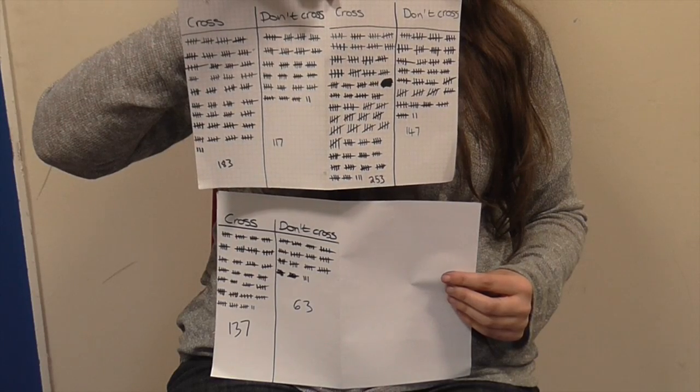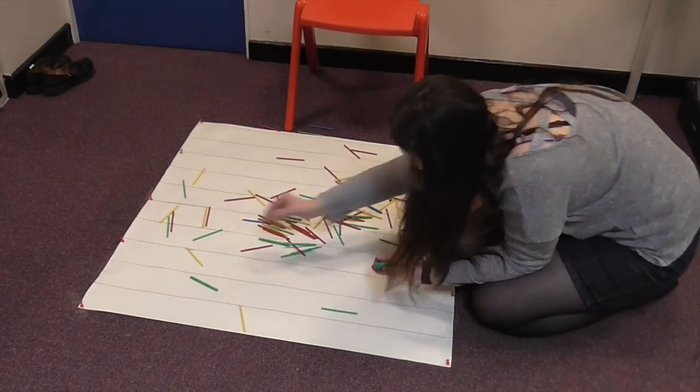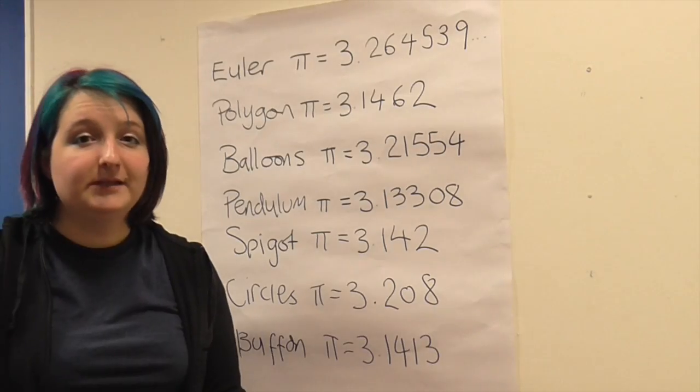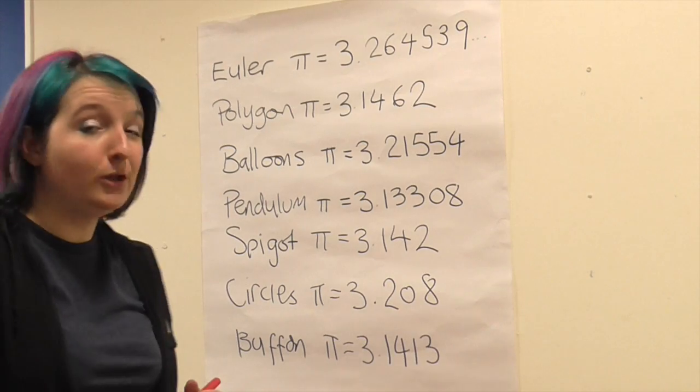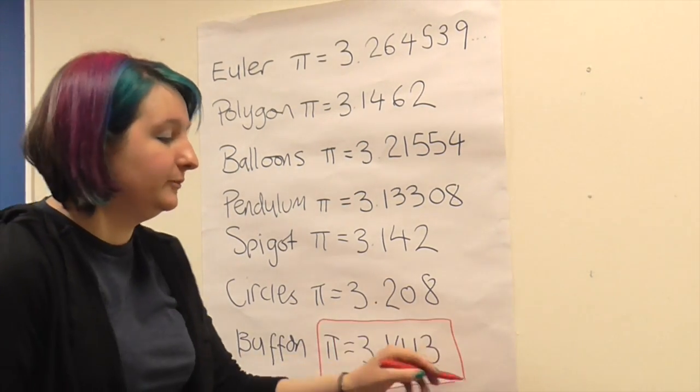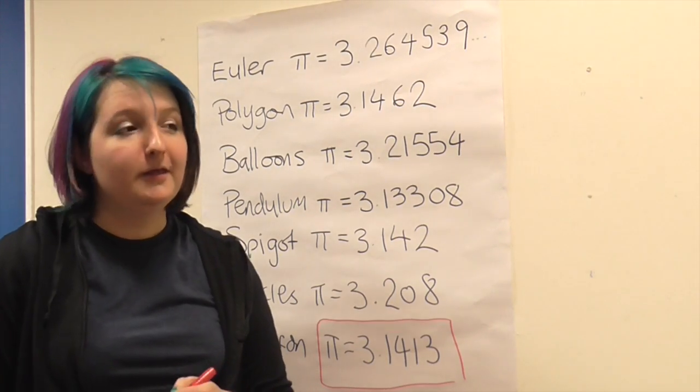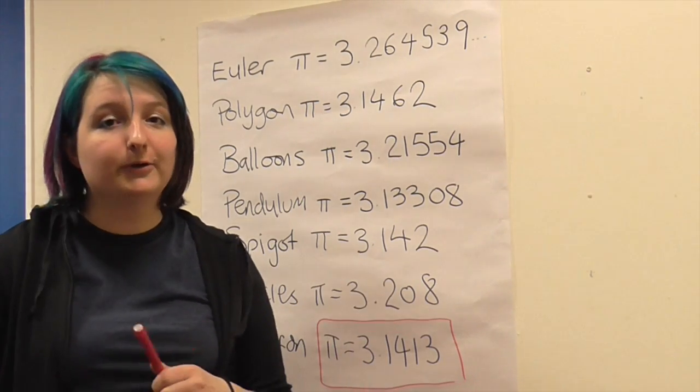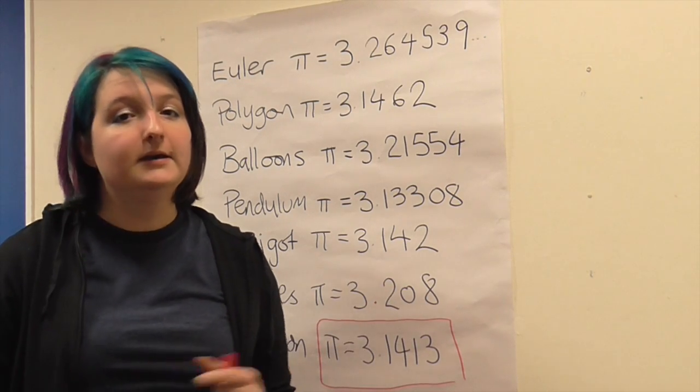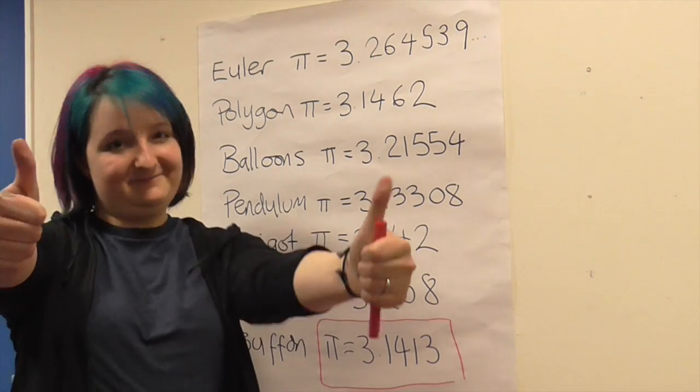So Sam, what's your final value from dropping sticks? So after many, many trials and picking up quite a few little straws and dropping quite a few, 3.1413. So that means that the winning value of pi, the closest approximation to the actual value, was this, achieved by Buffon's needle. So congratulations, Sam. Thank you to everyone who took part in the pi approximation challenge. And if you would like to have a go at approximating a value for pi, send us a video, we'd love to see it. Thank you.